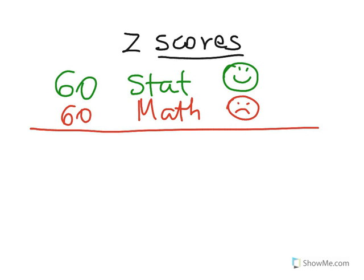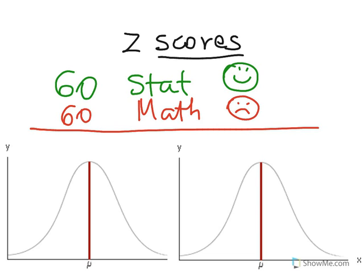Why? Because we need to know something else about the distribution in order to assess these two particular scores. Now that I've brought in these two bell-shaped curve distributions, I'm going to show you what's going on here. This is the math distribution and this is the statistics distribution. The other two values we really need to know in order to make sense of these two scores — 60 each — are the mean,